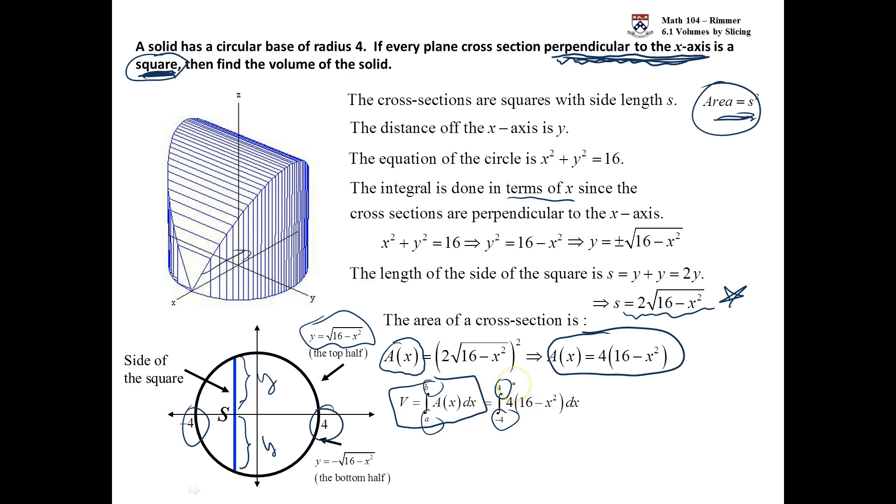When you integrate an even function over an interval from -a to a, because of the symmetry that an even function has, symmetric with respect to the y-axis, whatever's on the left side will be the same as on the right side. So what we can do to simplify our life is, instead of integrating from -4 to 4, we can integrate from 0 to 4 and double.